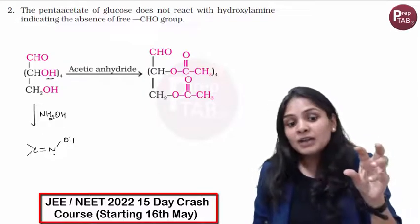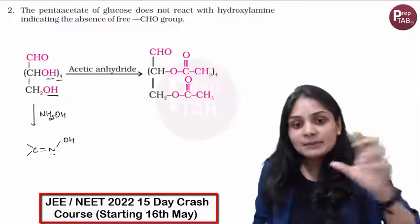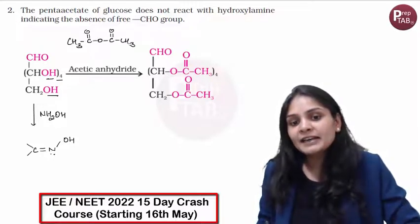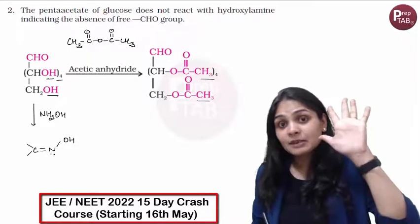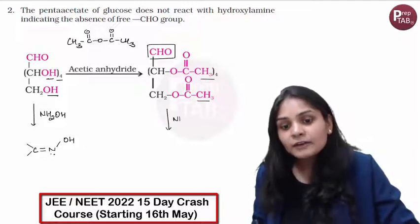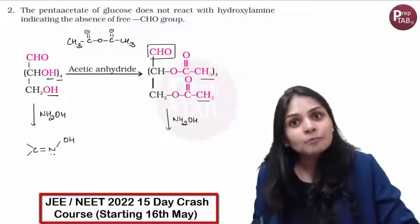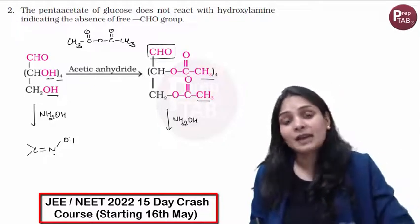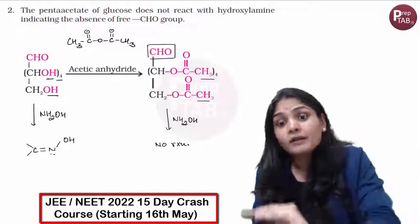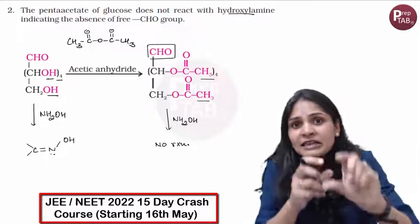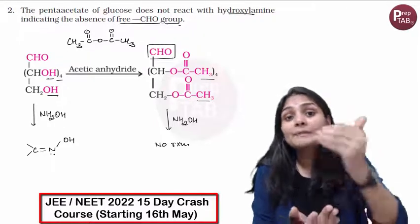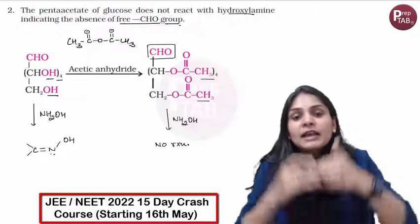Glucose has 5 hydroxy groups. When we react with acetic anhydride, it becomes pentacetate — meaning 5 acetate groups. The aldehyde group remains as is. When we then treat it with hydroxylamine, there is no reaction. So pentacetate of glucose does not react with hydroxylamine. What do we understand from this? There is no free aldehyde group present.